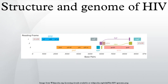The genome and proteins of HIV have been the subject of extensive research since the discovery of the virus in 1983. Each virion comprises a viral envelope and associated matrix enclosing a capsid, which itself encloses two copies of the single-stranded RNA genome and several enzymes.